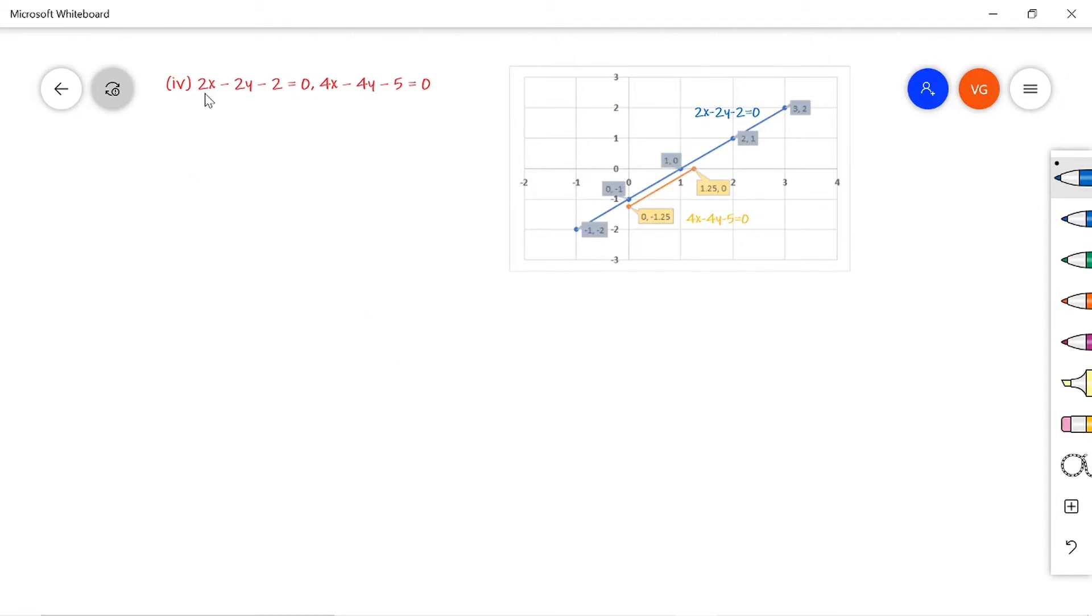Problem: given set of two linear equations, 2x minus 2y minus 2 equals 0, and 4x minus 4y minus 5 equals 0.